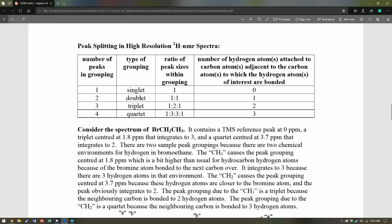The easy way to do it is just take the number of peak groupings, subtract one from it, and you get the number of neighboring hydrogen environments.